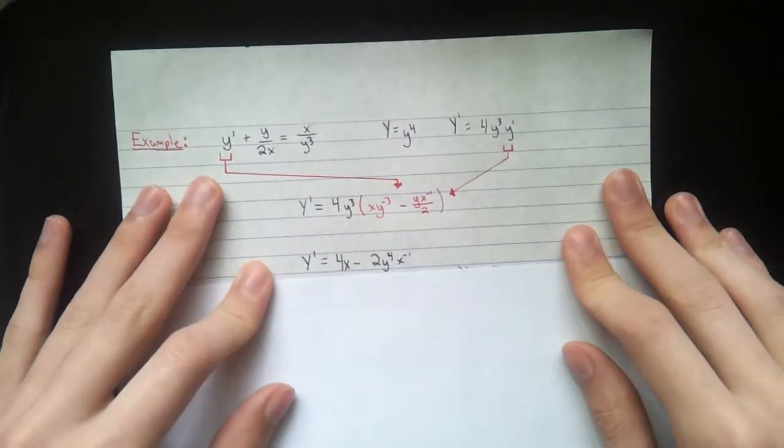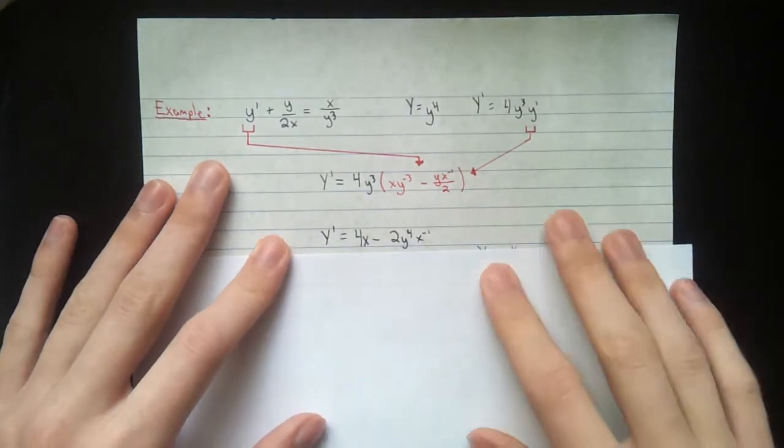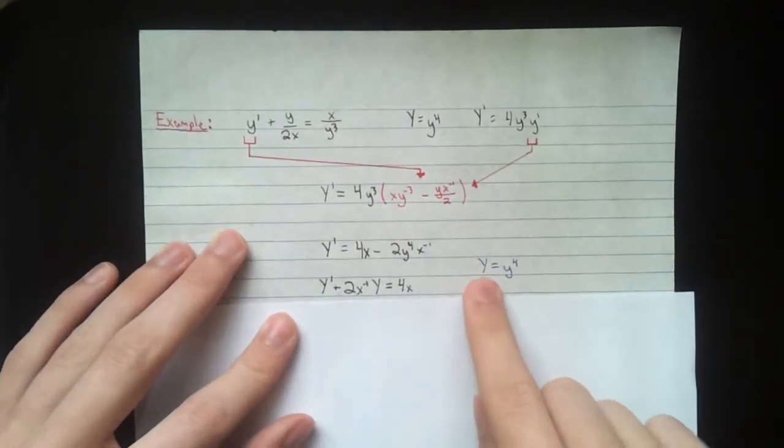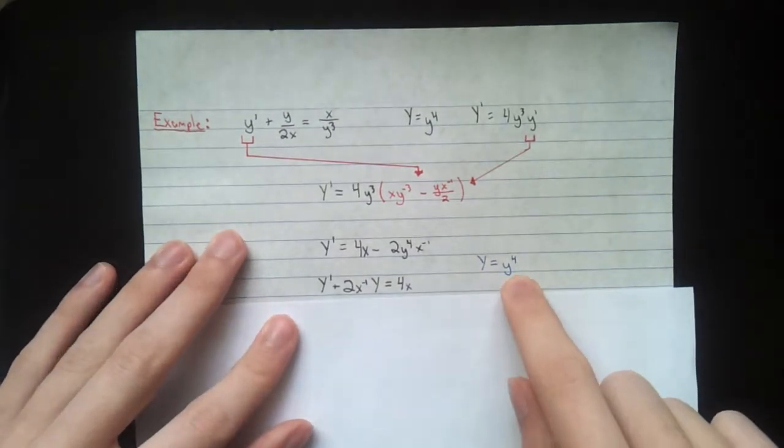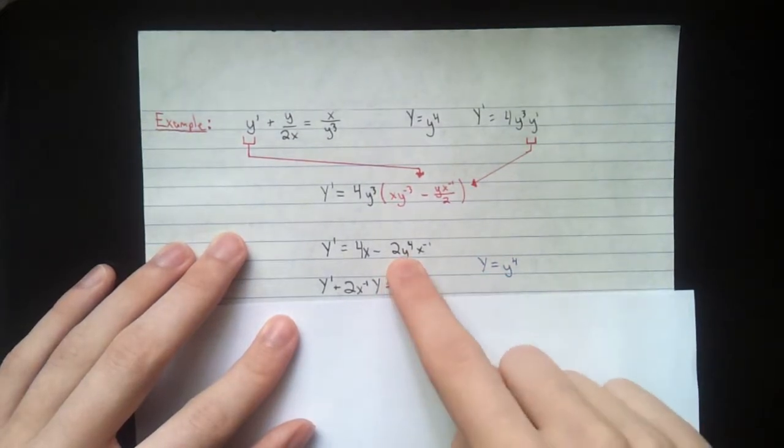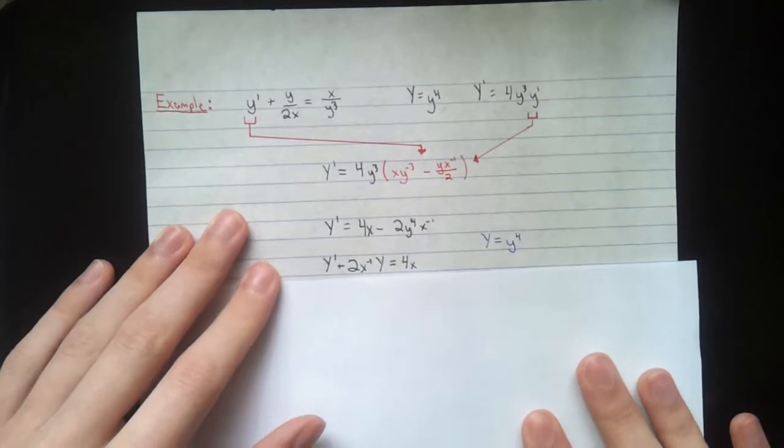Next up, I've just carried through that 4y cubed, just multiplying it in. And now we do our substitution here. Big y equals y to the 4. See, we have a y to the 4 here. So that's all I've done, is I put that in there. Moved it over here. Here's our standard differential equation.